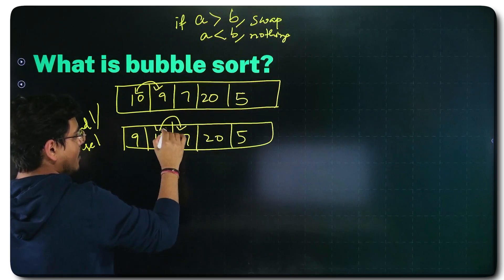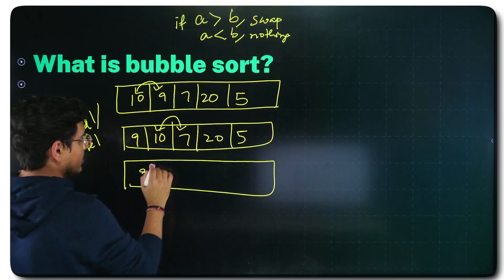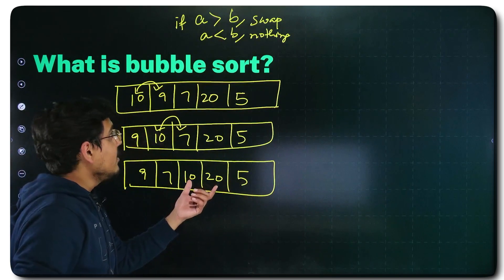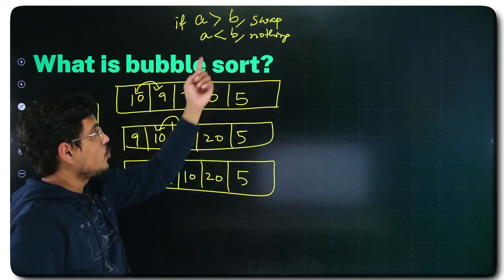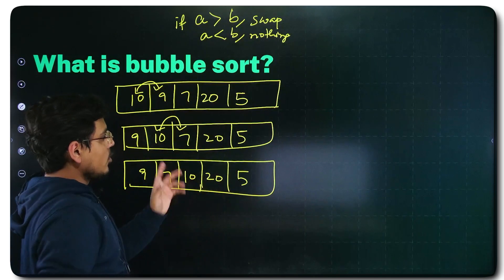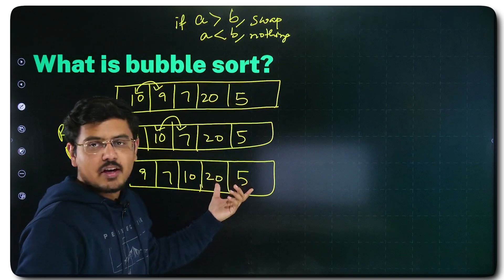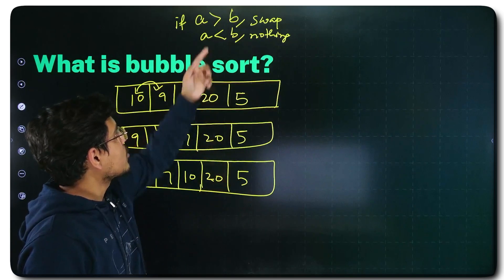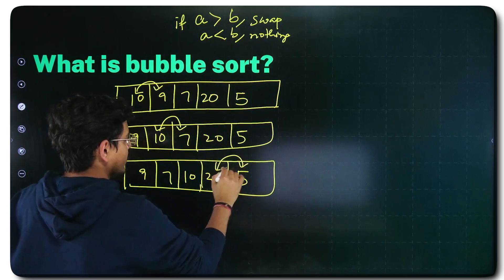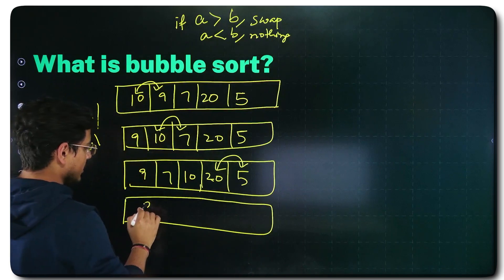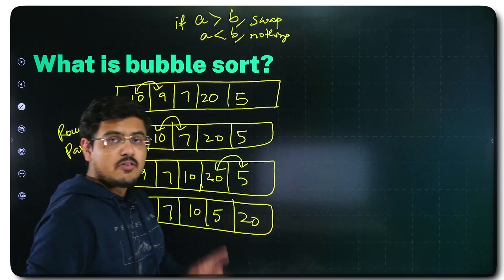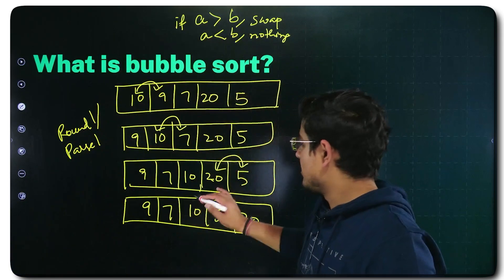Now I go ahead and check 10 and 7. 10 is greater than 7, swap again — giving 9, 7, 10, 20, 5. Now 10 is not greater than 20, so do nothing. Move further — 20 and 5: 20 is greater than 5, so swap happens here.